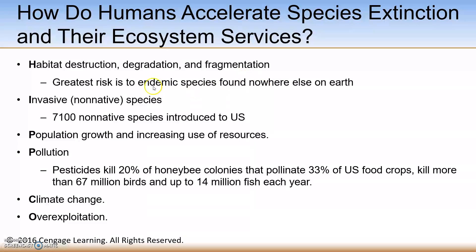Certain species are considered endemic species — found nowhere else on Earth — and habitat loss is the greatest risk to these types of species. Another cause of species extinction is introducing non-native species into areas where they out-compete native species. Here in the United States, we've had over 7,100 non-native species introduced.